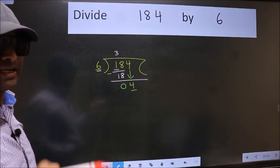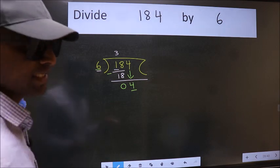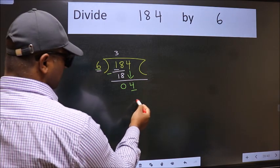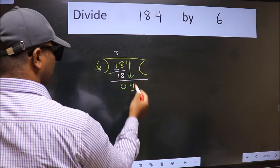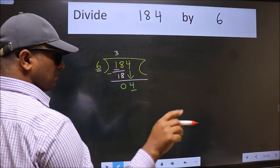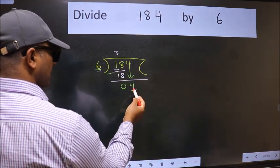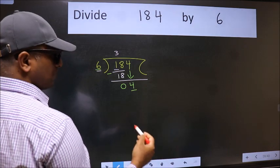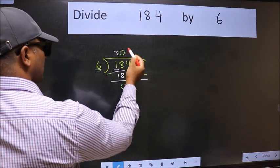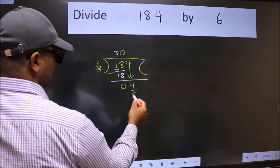Instead of that, what you should think of doing is, which number should we take here? If I take 1, we will get 6, but 6 is larger than 4. So what we do is we take 0. So 6 into 0, 0.